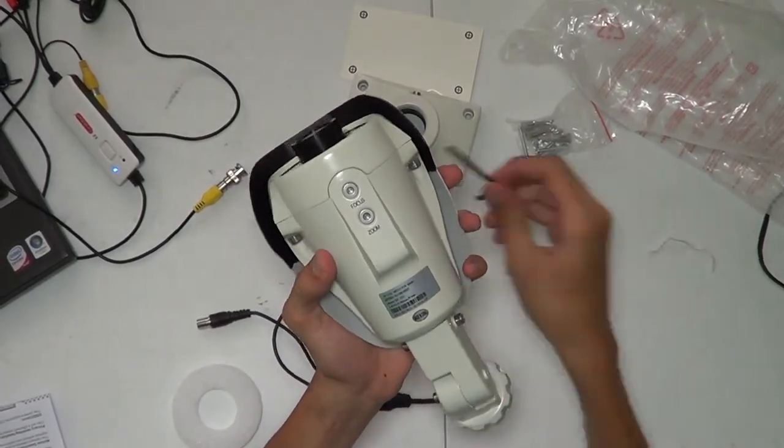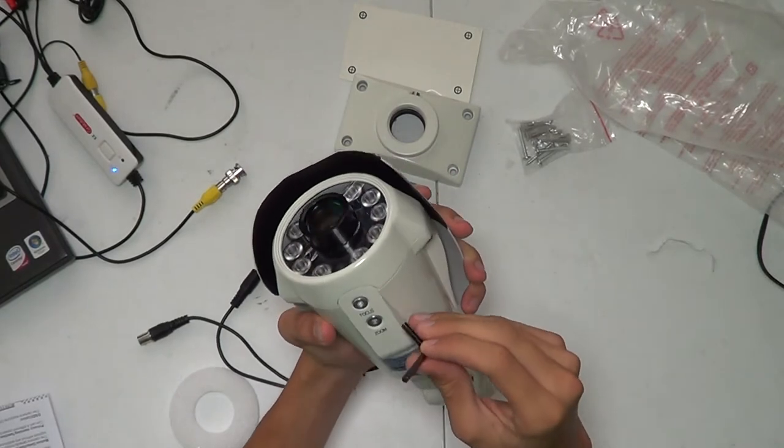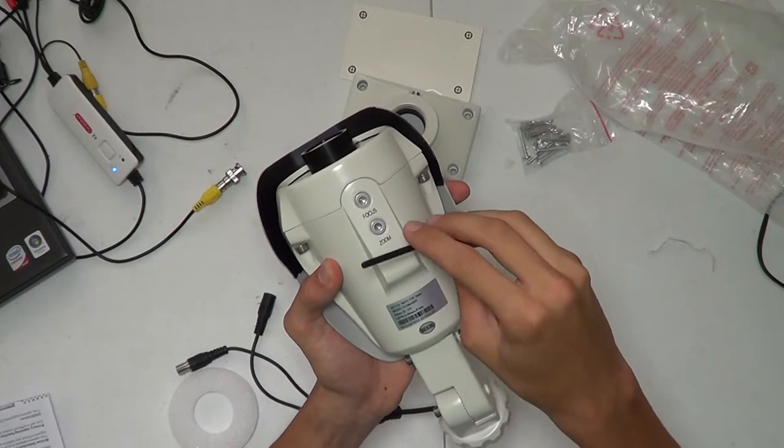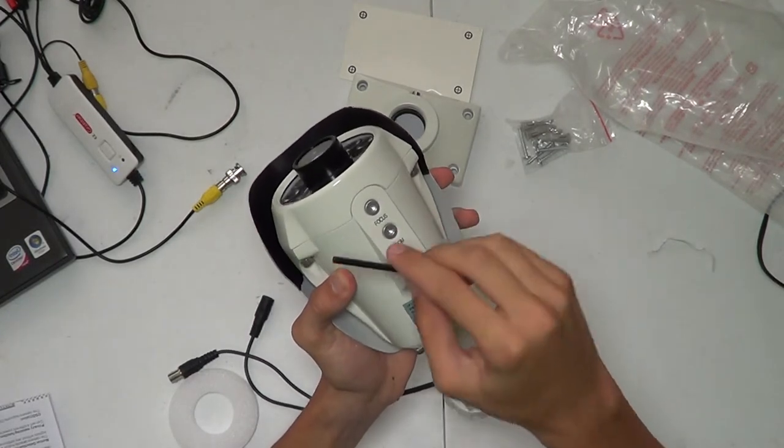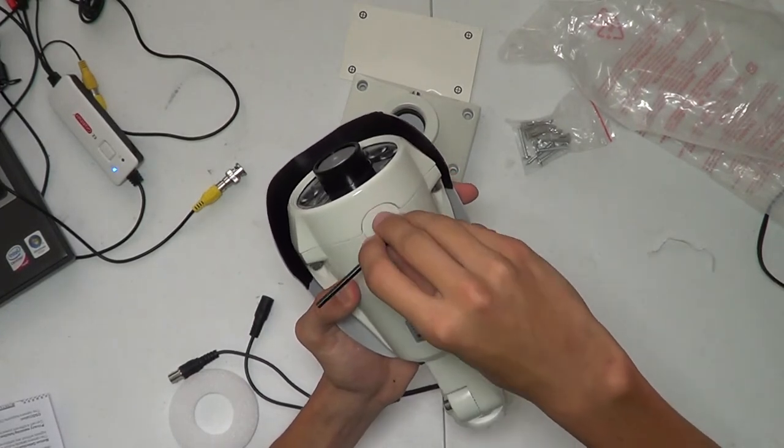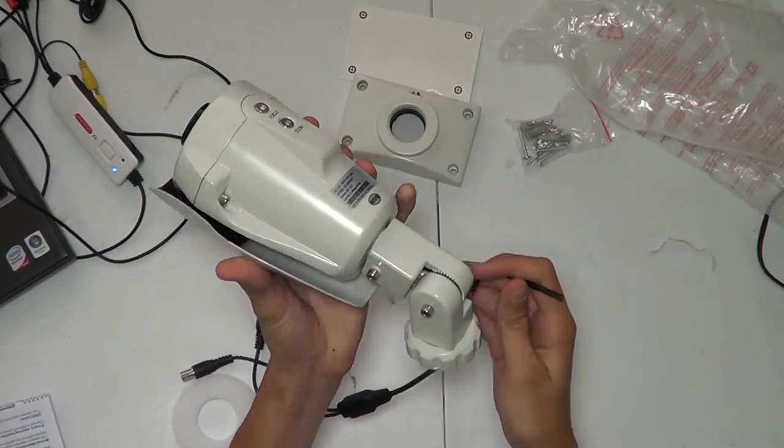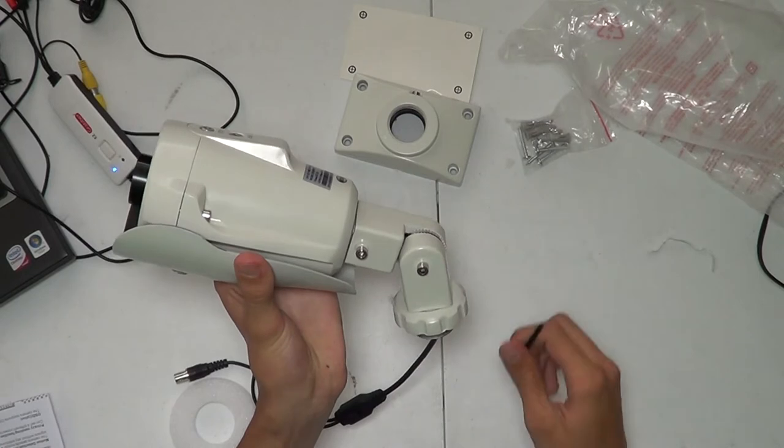On the bottom here, this is where the Allen wrench comes in handy. We have two adjustment knobs here for focus and zoom. You'll see when we do the demonstration—this one adjusts the focus, this one adjusts the zoom. And this Allen wrench is also used for tightening these joints here.